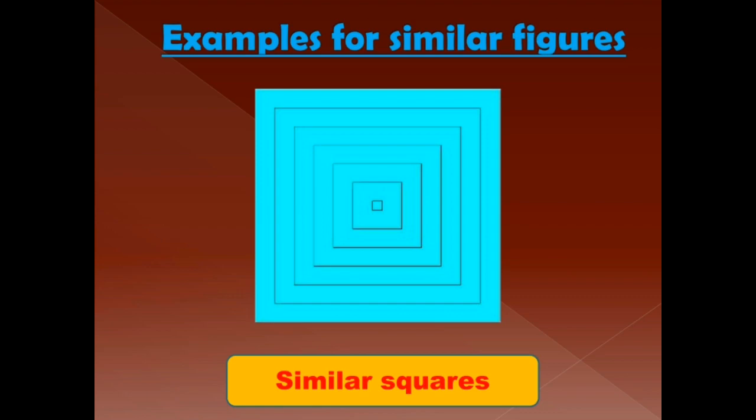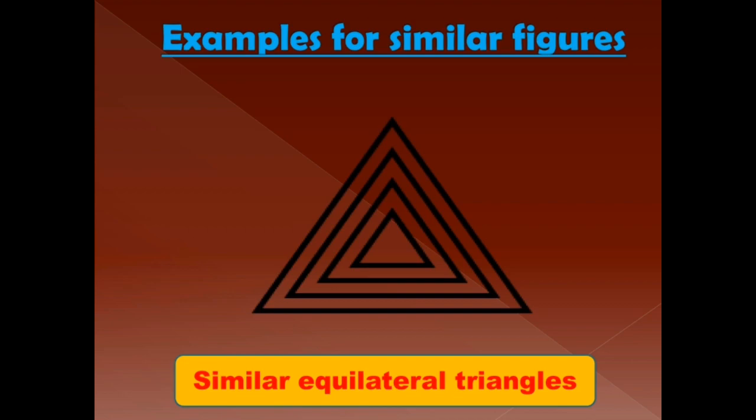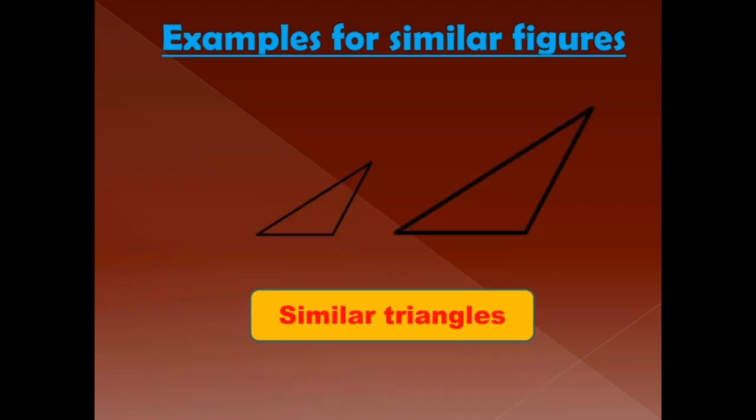Now we shall see some examples of similar figures. All regular polygons having the same number of sides are always similar. For example, all squares are similar, since their corresponding angles are equal and the ratios of the lengths of their corresponding sides are the same or in proportion. On the same lines, all equilateral triangles are also similar, and circles with different radii are also similar. You can see two similar triangles on the screen — they resemble the same shape since their corresponding angles are equal and the lengths of the sides are in the same ratio or proportion.